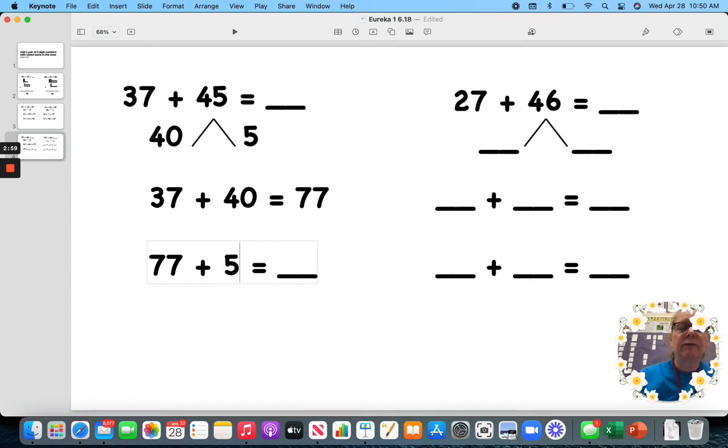I'm adding 5. So, 77 would be 77, 78, 79, 80, 81, 82. That would be 82.